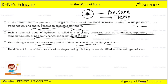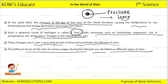The change in pressure and temperature decides the life cycle of a star. The different forms of a star at various stages during this life cycle are identified as different types of stars. Due to the different forms of stars, stars are of different types based on their life cycle.